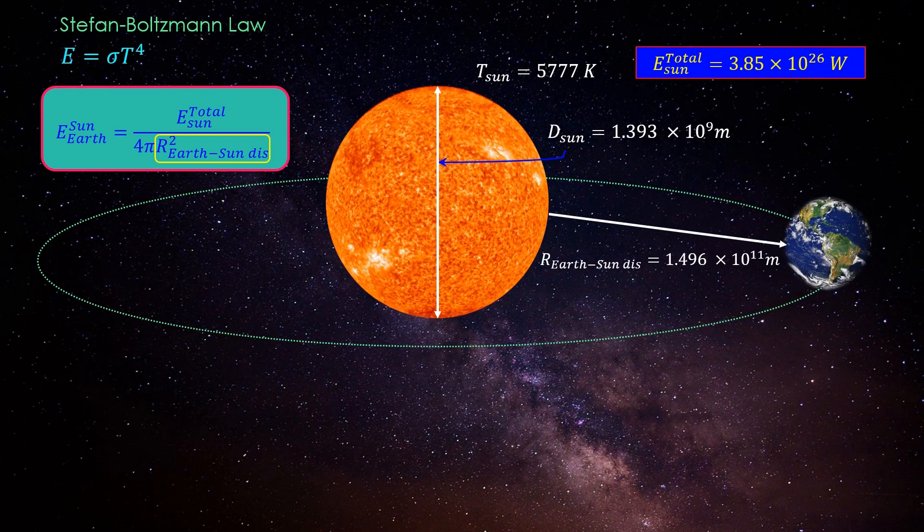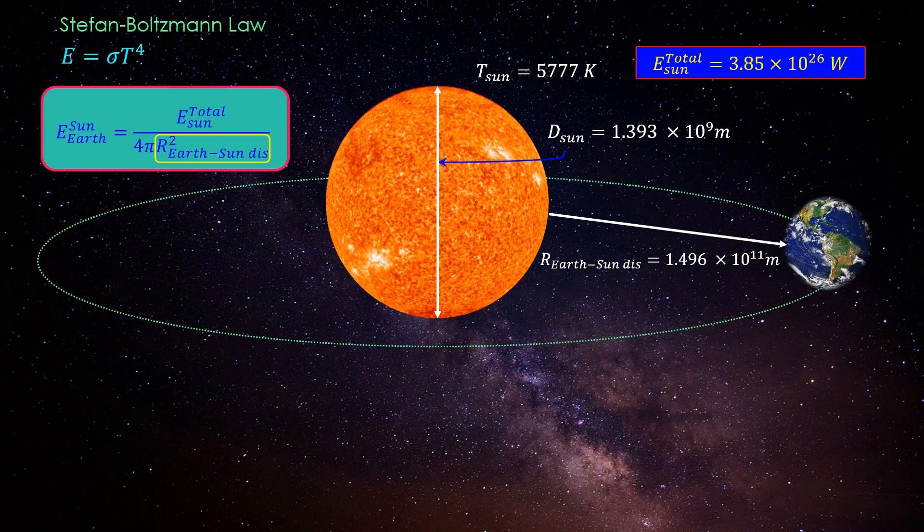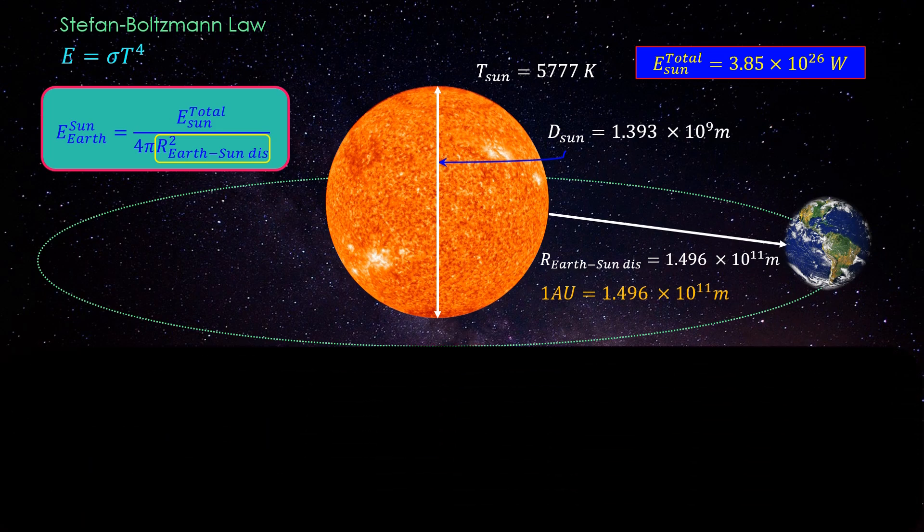The value of r_earth-sun distance is 1.496 times 10 to the power 11 meter. This distance is also known as one astronomical unit. Now putting all the values, we get solar constant equal to 1369 watt per meter square. This is the solar flux the satellites will receive around earth.